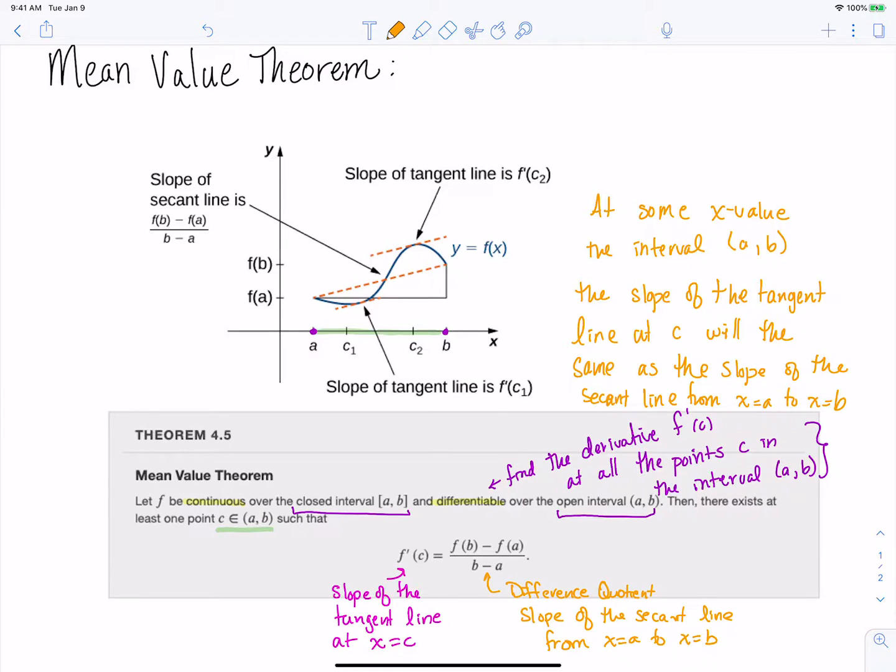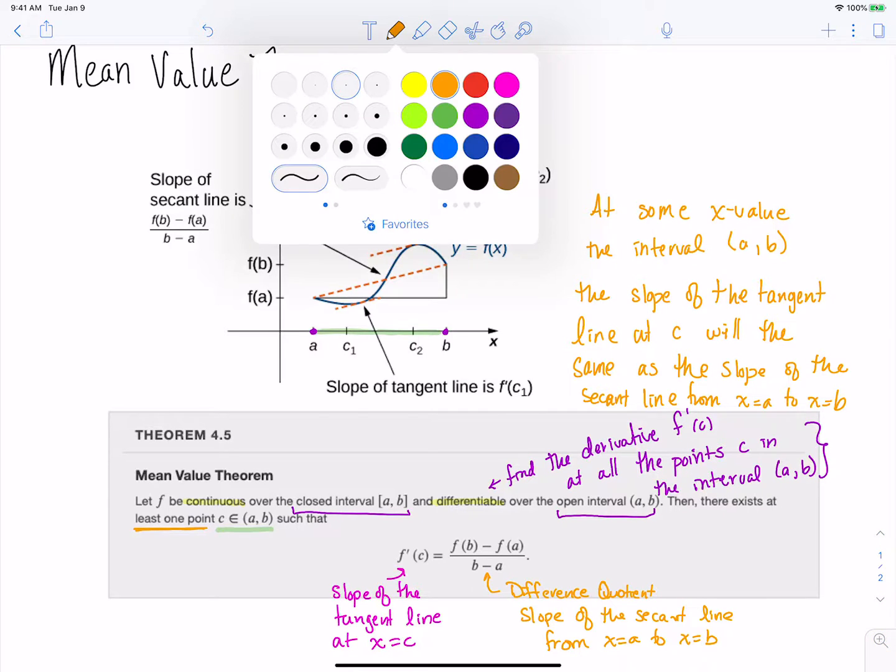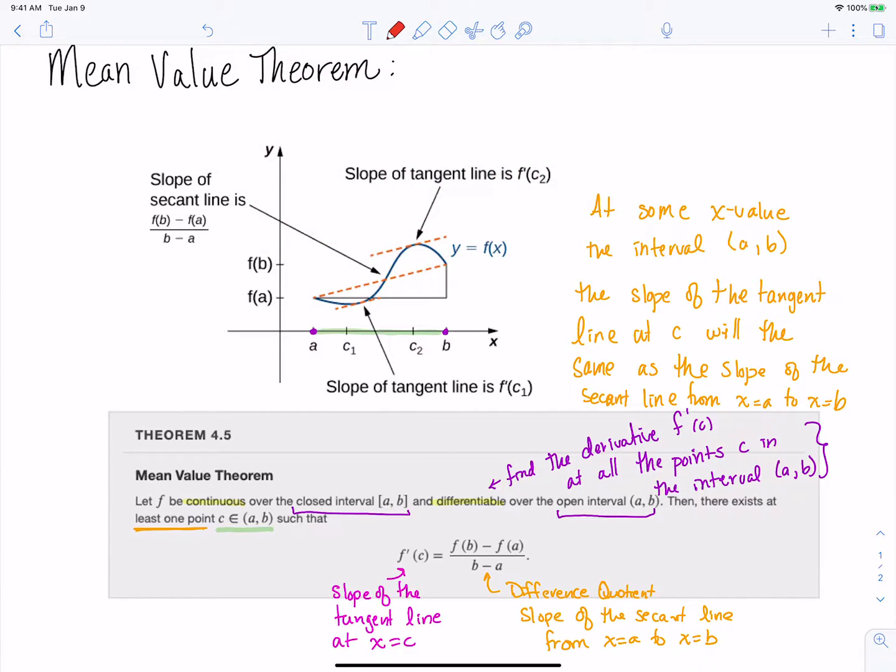Thank you for bearing with me while I was writing that there. And so there's another thing here where it says at least one point. So there could be more than one of those values where the tangent line's slope is equal to our secant line. And that's what we're seeing here in this picture.